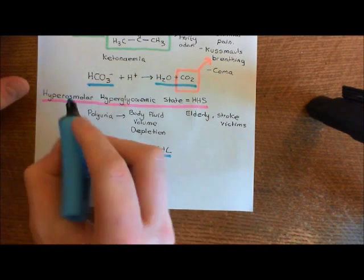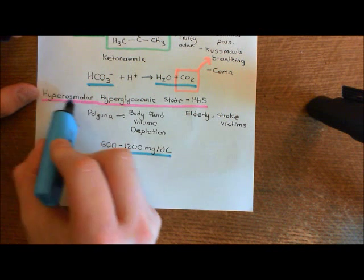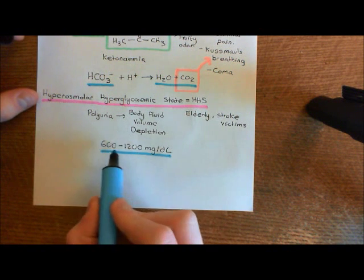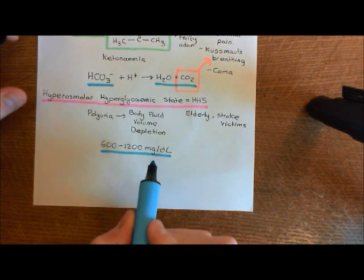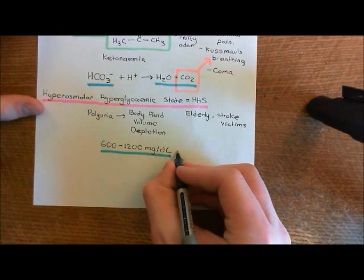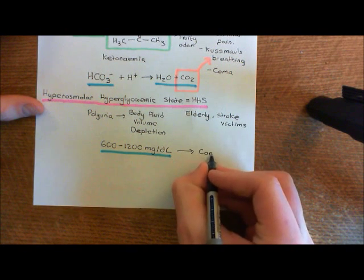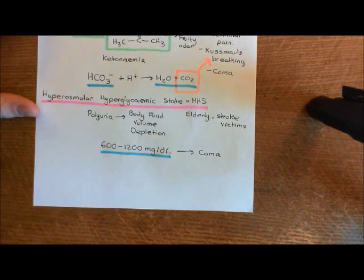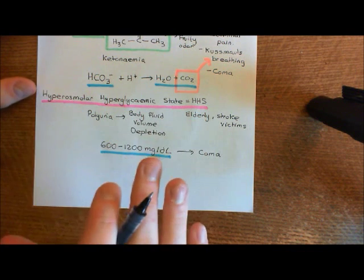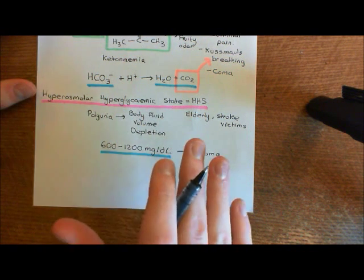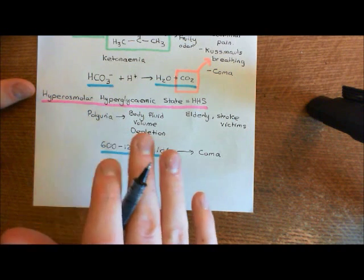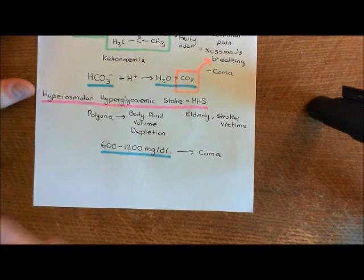When blood concentration of solutes, and particularly glucose concentrations, rise to this extent, it causes major problems for the functioning of the brain. It can cause you to go into a coma. So the hyperosmolarity and hyperglycemia together can cause coma — that's the horrible result of HHS if it's not dealt with appropriately. This is another acute complication that can occur if you simply don't drink when needed, because your body fluid is being depleted by the polyuria.